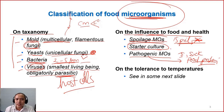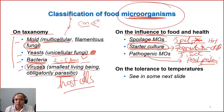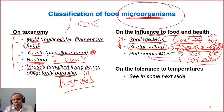We also have another group — starter cultures. We use these intentionally to do fermentation. When we make yogurt, wine, beer, or fermented meat, we add microorganisms and we want them to grow so they can cause changes in the way that we want. Spoilage and starter culture categories can be related. For example, lactic acid bacteria — normally in yogurt or fermented vegetables we want them to grow and call them starter cultures. But in other products, we don't want them to grow, and if they do, they cause spoilage.